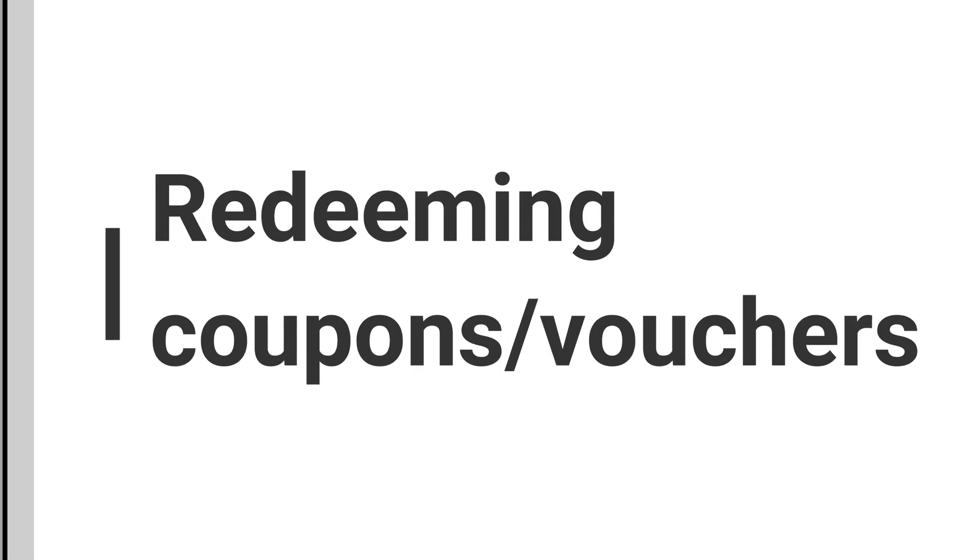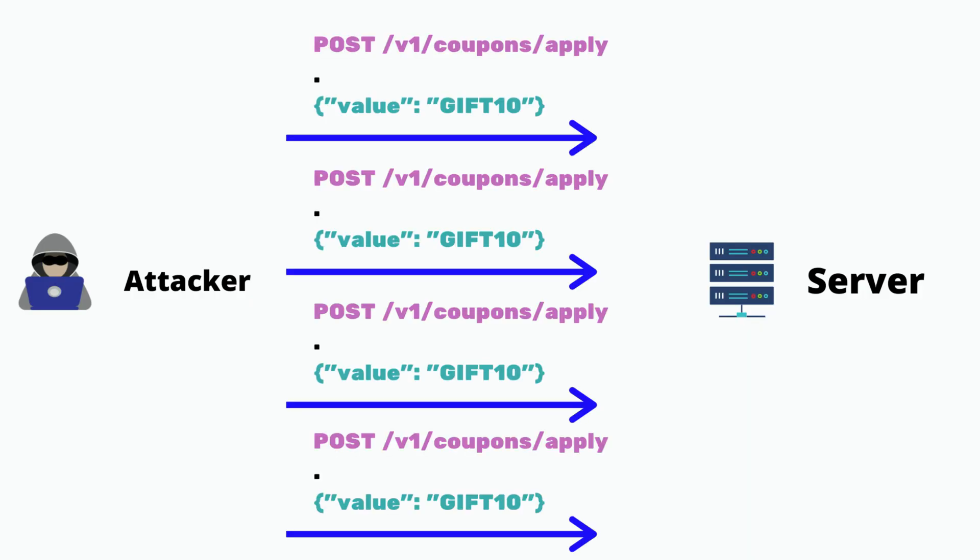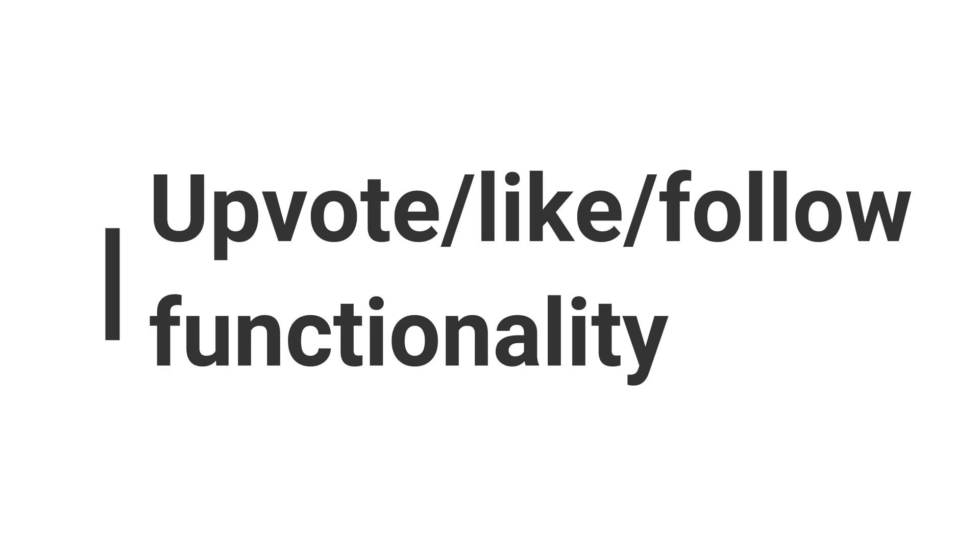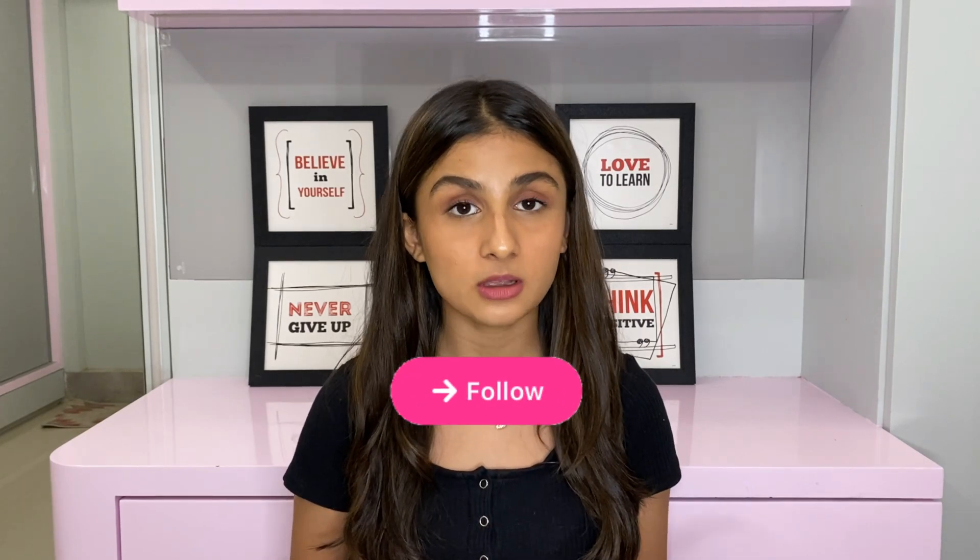The first scenario where you can look for race condition bugs is while redeeming gift cards, coupons, and vouchers — typically found in e-commerce applications. By sending multiple concurrent requests at the exact same millisecond, you might be able to redeem a coupon more than once. This happens because before the app can invalidate the coupon, the next request is already sent, leading to the same discount being applied multiple times. Disclosed reports for these bugs will be linked below.